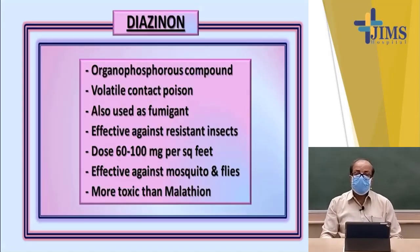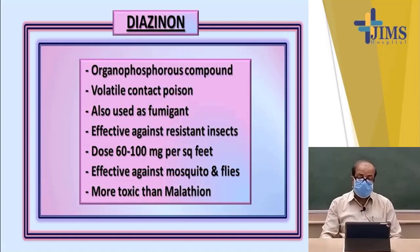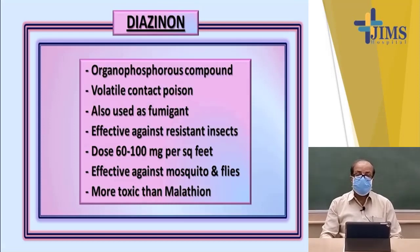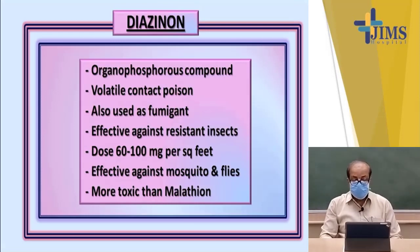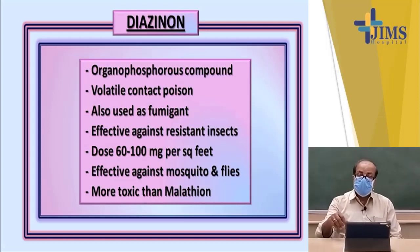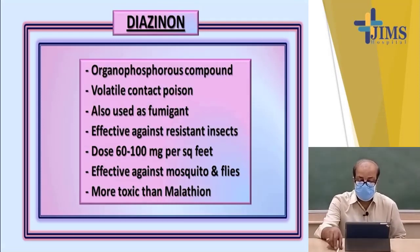The next compound in the organophosphorus variety is diazinon. Diazinon is a volatile contact poison and is also used as a fumigant. It is effective against resistant kinds of vectors — those vectors which show resistance against malathion can be subjected to diazinon to kill those resistant vectors. The dose is 60 to 100 milligrams per square foot. It is effective against mosquitoes and flies and is more toxic and more active than malathion.